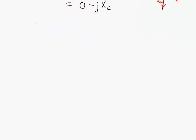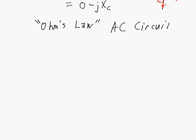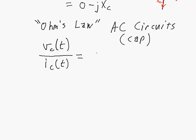This capacitive impedance gives us a sort of Ohm's law — I'll put it in quotes — for AC circuits with a capacitor. The reason I call it Ohm's law is because it shows the relationship between voltage and current, but the reason it's not really Ohm's law is because it's not really resistive. Given a voltage expression and a current expression, dividing the two gives us the impedance of the capacitor. Now let's do a couple of examples.